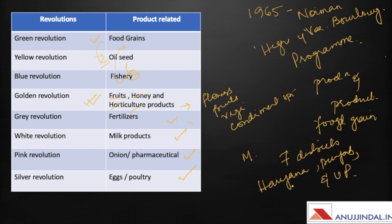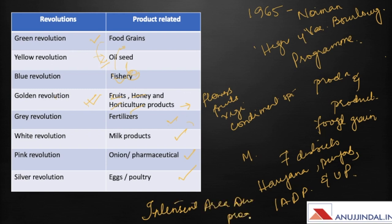This program was termed as IADP — Intensive Area Development Program — during 1966. The main aim of the Green Revolution was to increase the production and productivity of food grains, create high yielding varieties, increase use of fertilizers, and increase the efficient use of irrigation.